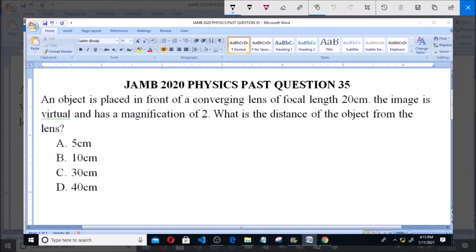JAMB 2020 Physics Past Question 35: An object is placed in front of a converging lens, that's a convex lens, of focal length 20 cm. The image is virtual and has a magnification of 2. What is the distance of the object from the lens?